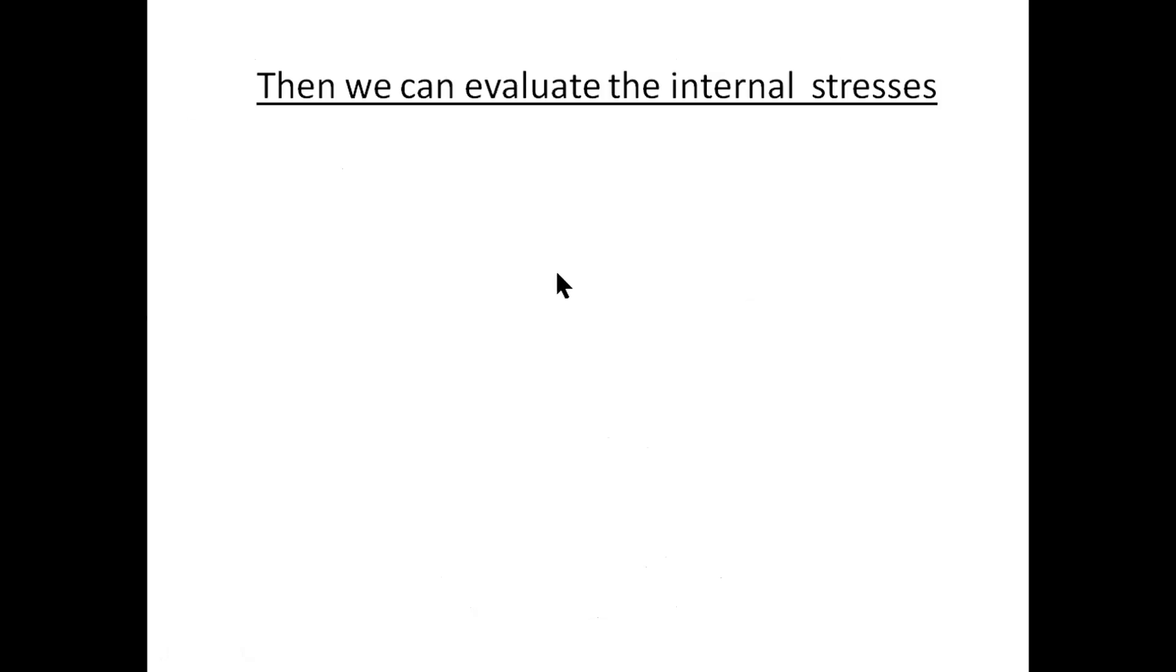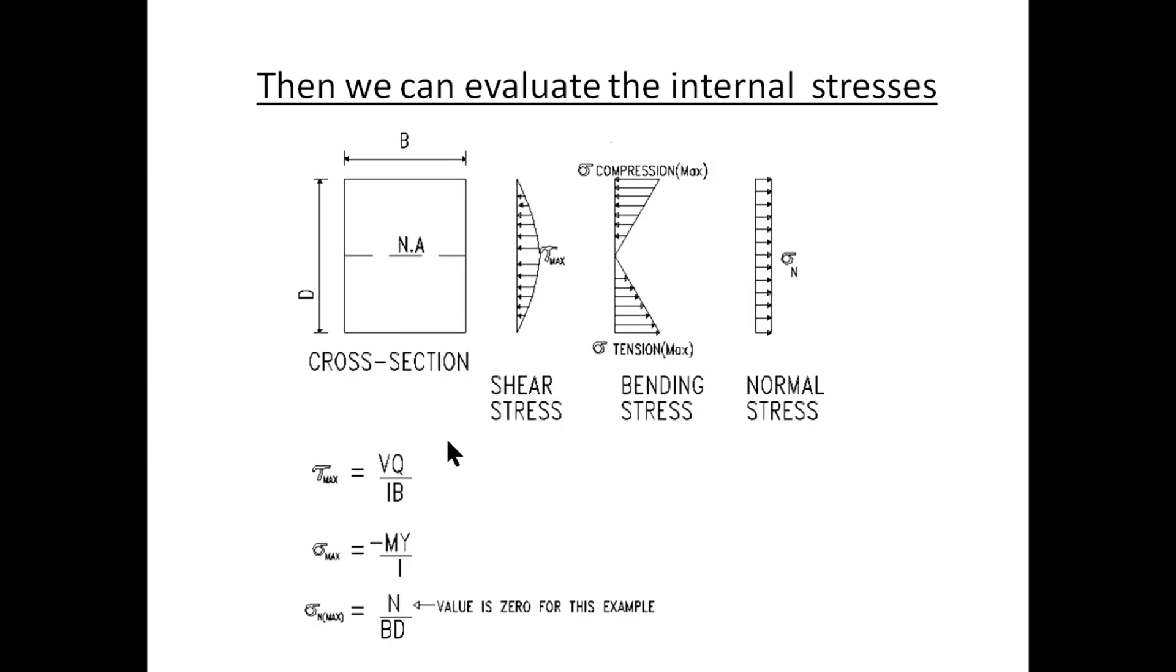The final step of course we can evaluate the internal stresses at this location. And where we have the shear stress which is equal to the formula VQ over IB or some textbooks they have it as I which is the moment of inertia multiplied by T. Then where V in this case is the internal shear force VI that we calculated before. And then we have the bending stresses which is minus MY over I and M in this case is the internal moment MI. And finally the normal stress but in this case the normal stress is zero. If we had any external horizontal forces then it will just be N divided by the area the cross-sectional area which is B times D. In the next video part three we will quickly go through the internal loadings in beam B2.